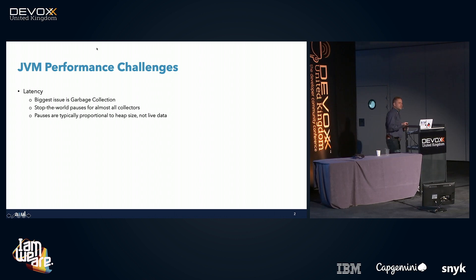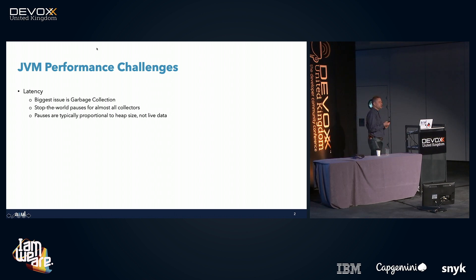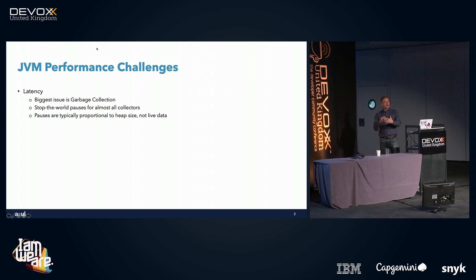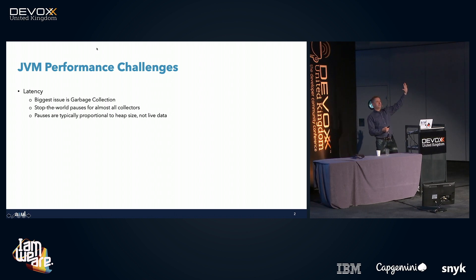The first of those is latency — how quickly can we respond to a request from the user? There are a number of things that can impact JVM latency, but the biggest is garbage collection: automated memory management. We don't have to worry about allocating space for objects or reclaiming that space once we're done. Who here has ever experienced a garbage collection pause?